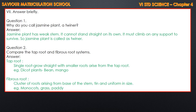Second: Compare the taproot and fibrous root system. Taproot is a single root which grows straight, with smaller roots arising from the taproot. Example: dicot plants such as bean and mango. Fibrous root: a cluster of roots arise from the base of the stem, thin and uniform in size. Example: monocots such as grass and paddy.